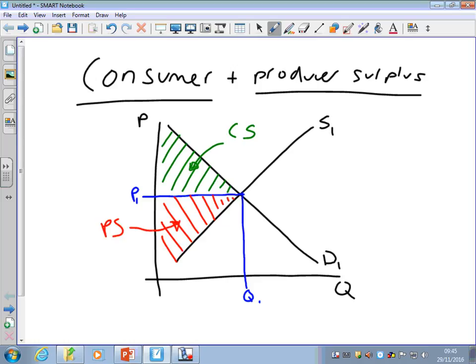To take a couple of examples along this diagram, if I was here, the firm was prepared to charge this price for the product, but they actually got P1. The gap between P1 and their supply curve shows the producer surplus they earn from selling that particular product.